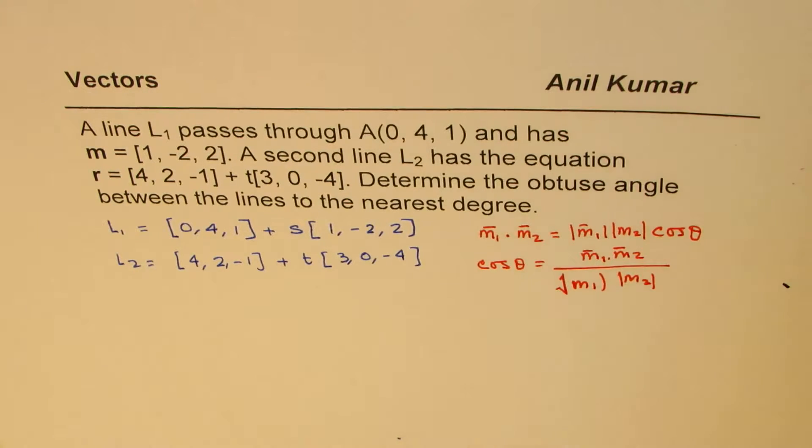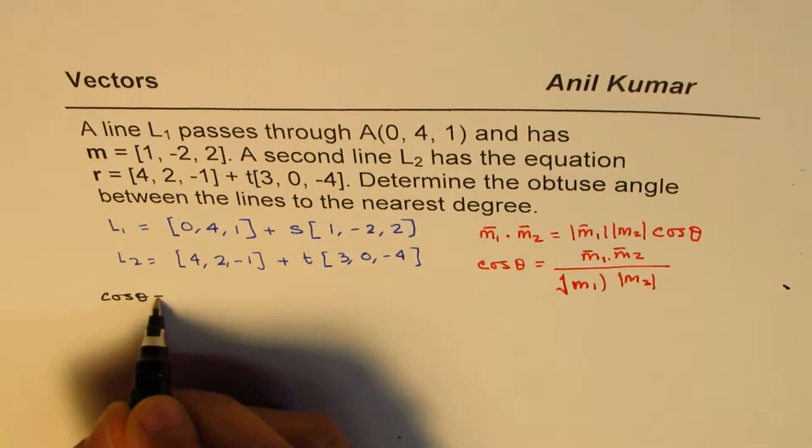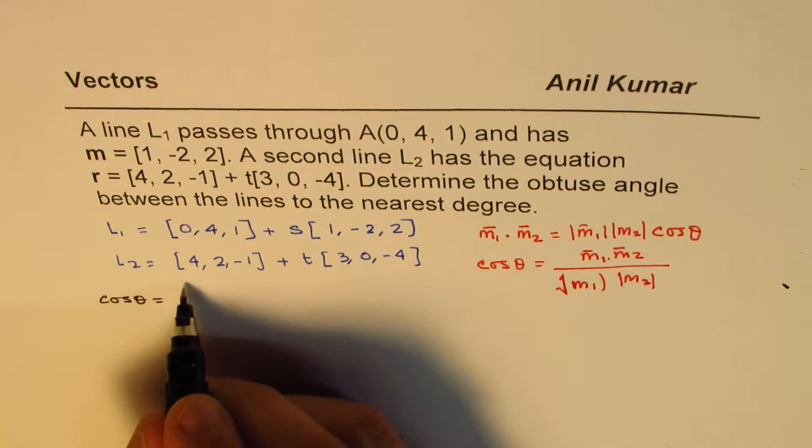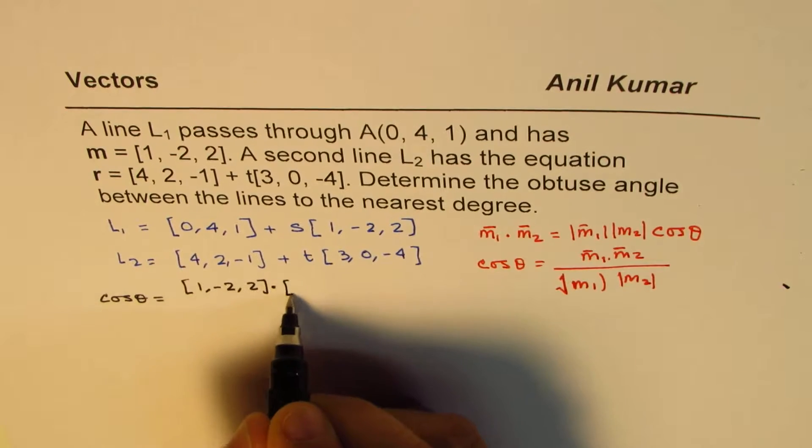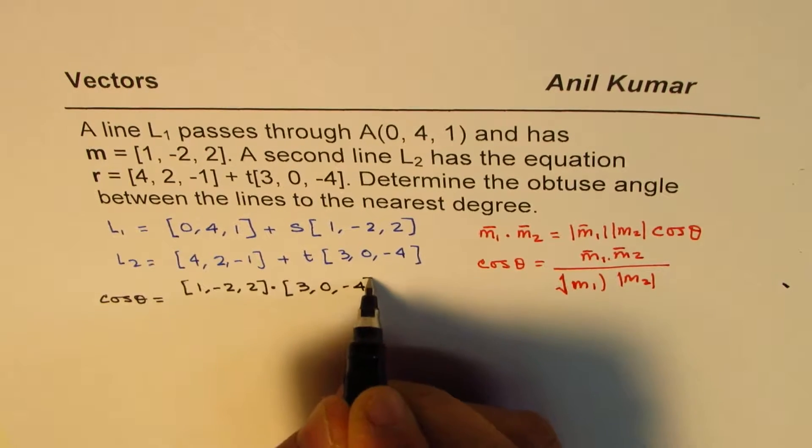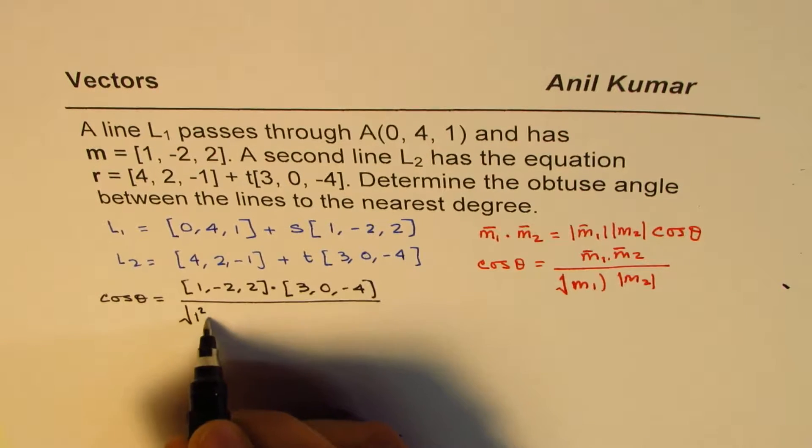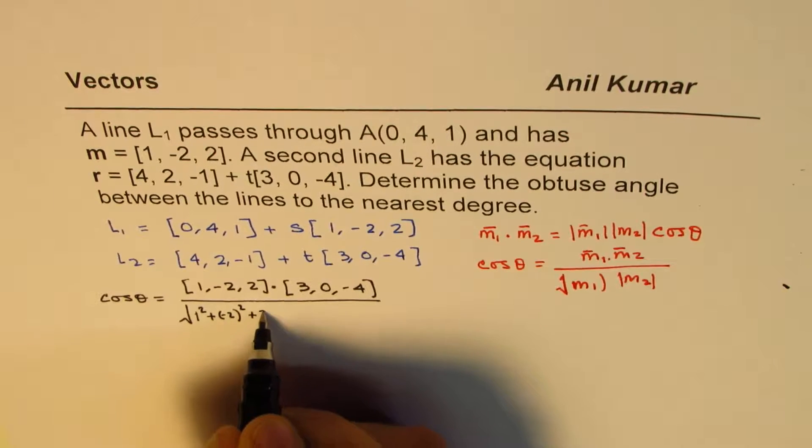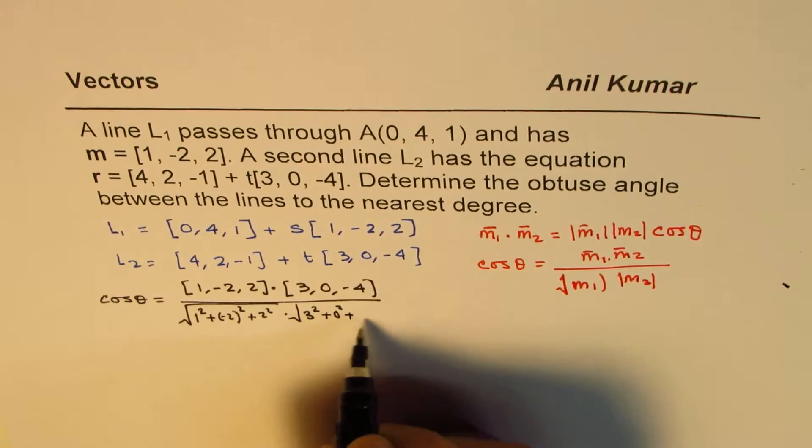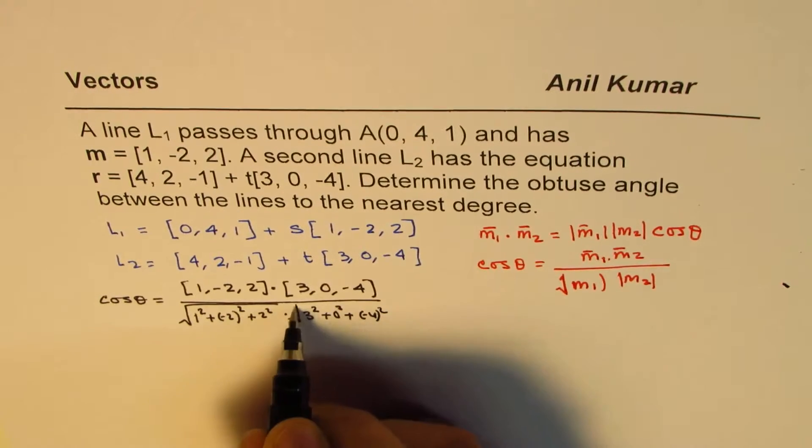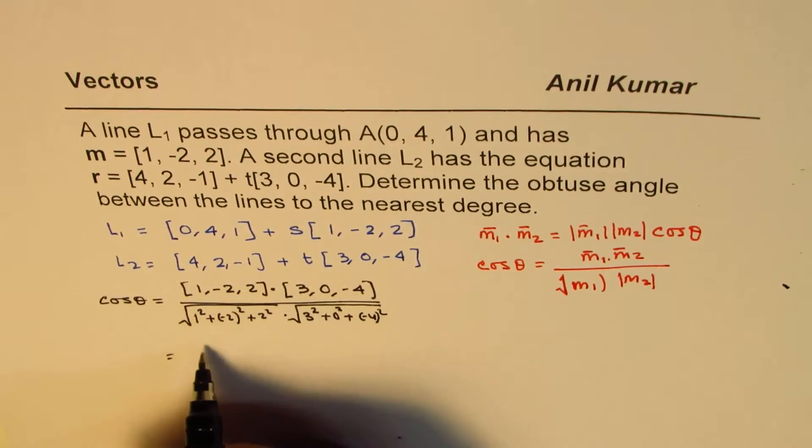So let's calculate the dot product. So we have cos theta equals to dot product of these two direction vectors: (1,-2,2) dot (3,0,-4). The magnitudes are square root of 1 squared plus minus 2 squared plus 2 squared times square root of 3 squared plus 0 squared plus minus 4 squared.